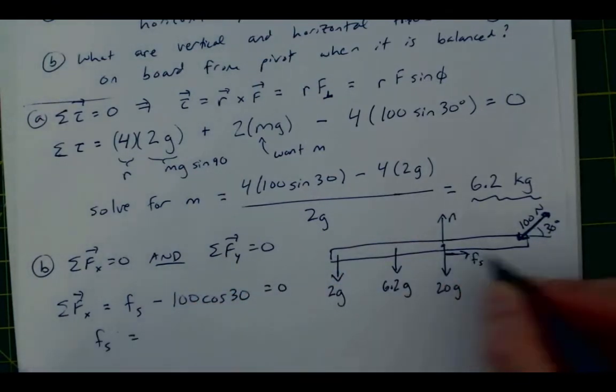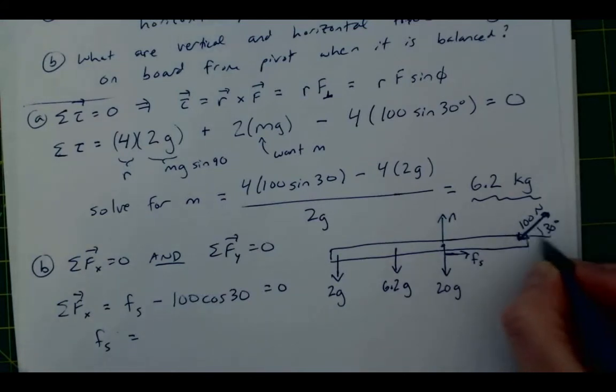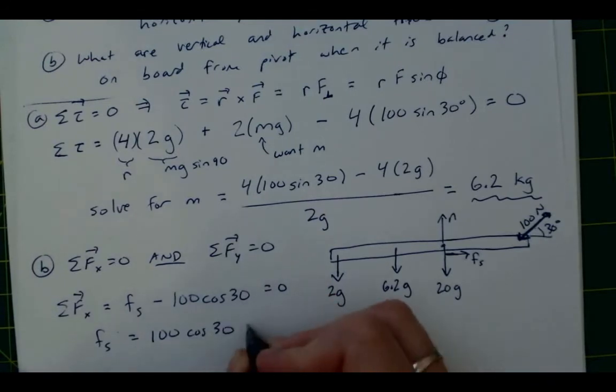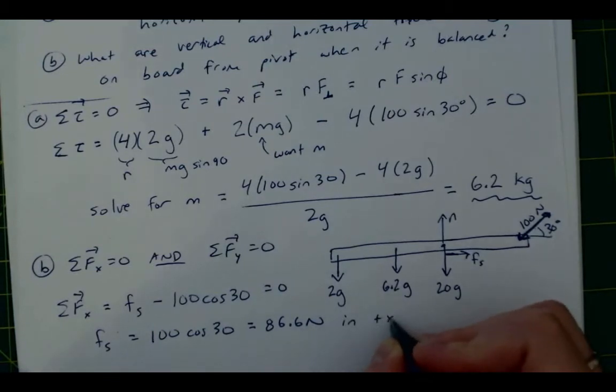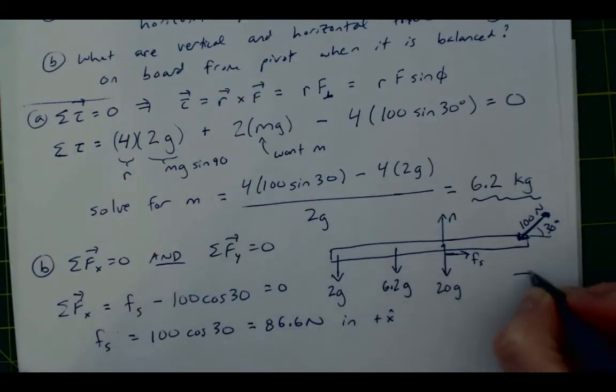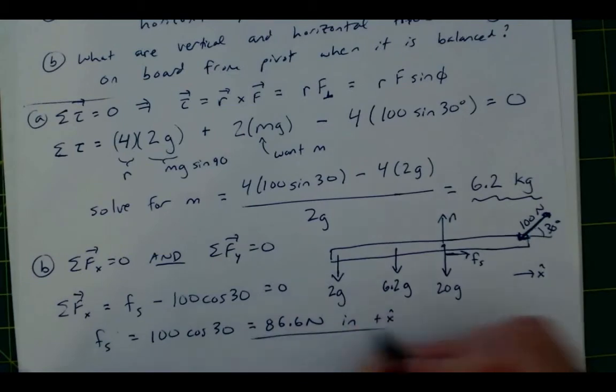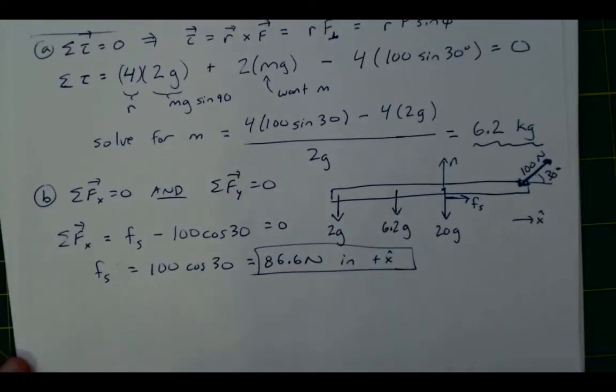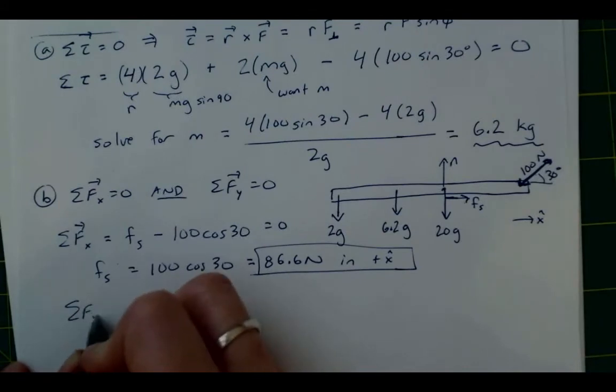So as I was saying, this force of static friction to the right is going to balance this horizontal component of that 100 newton force. So that's gonna be equal to 100 times cosine of 30, which is equal to 86.6 newtons in the positive x direction.